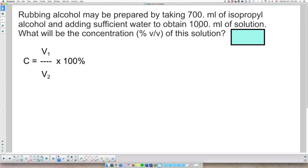To obtain 1000 mL of solution. What will be the concentration, percent volume over volume of this solution? So clearly they're telling you that you have two volumes involved, volume of solute, volume of solution.